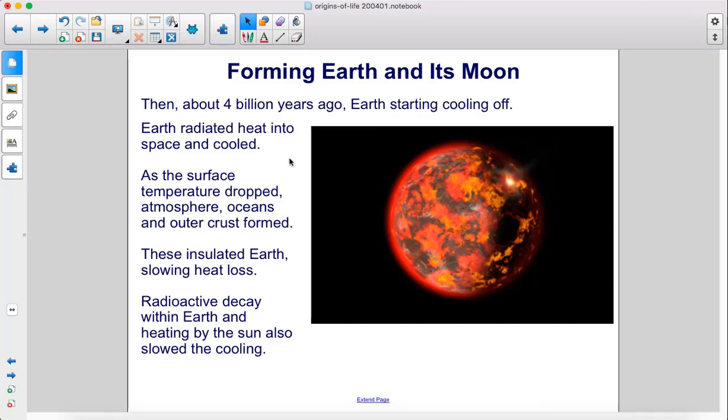These insulated Earth, slowing heat loss. Radioactive decay within Earth and heating by the Sun also slowed the cooling.